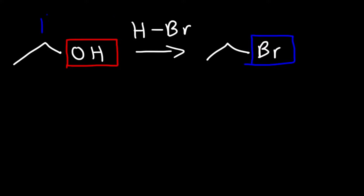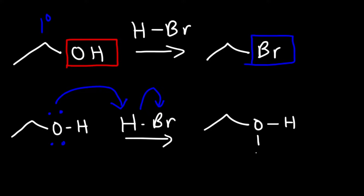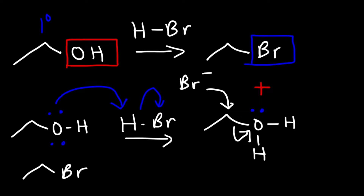We have a primary alcohol, so the mechanism will go through an SN2 reaction. The first step is protonation of the OH group — OH is a bad leaving group, but once you add a hydrogen to it, it becomes a good leaving group. The oxygen acquires a hydrogen, gaining a positive charge. In the second step, the bromide ion attacks from the back in an SN2 reaction, expelling H₂O to give our alkyl halide.